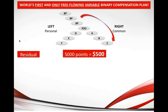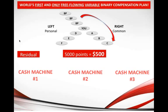How does the residual income in Global Wealth Trade work? Every five thousand points equals five hundred dollars if you're a diamond or gold member. So five thousand points equals five hundred dollars — it's a very simple ten percent system.